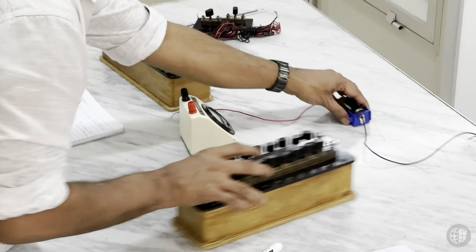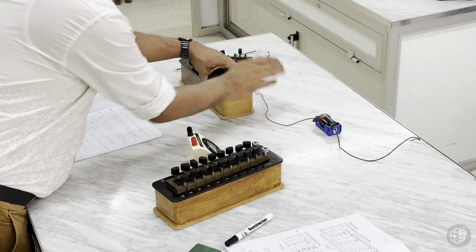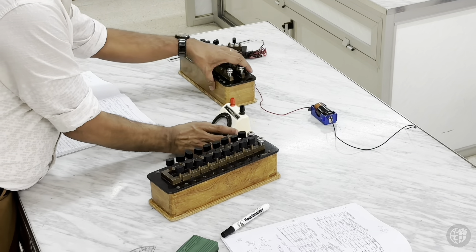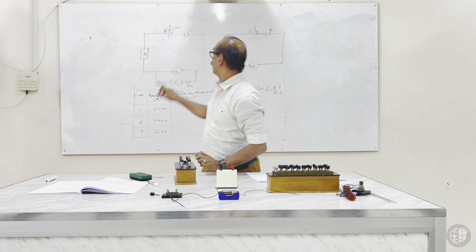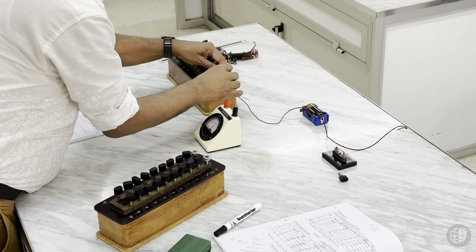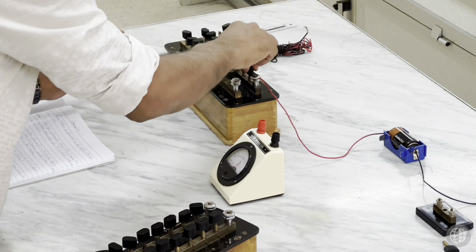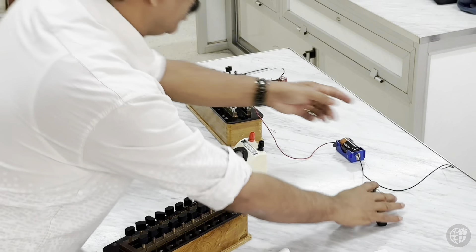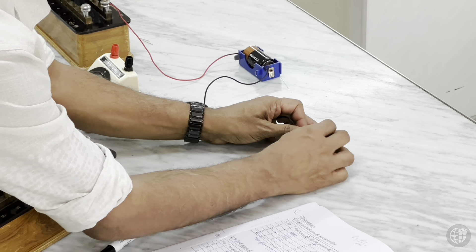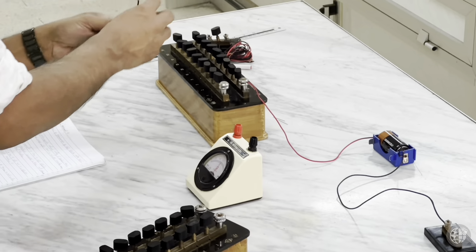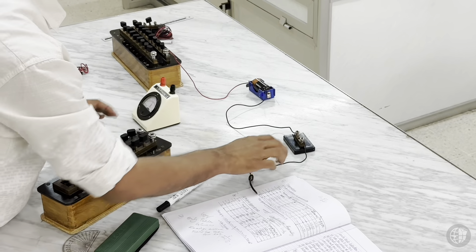Keep all the parameters as per the diagram. The resistance box is placed here, the galvanometer connected in series, and the key connected. First complete the series connection. Make sure all circuit connections are tight. You can test by pressing the key to see if the galvanometer shows deflection, confirming the series circuit is complete before adding the parallel shunt connection.